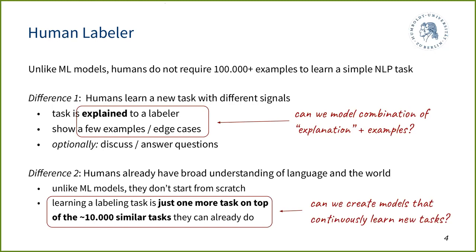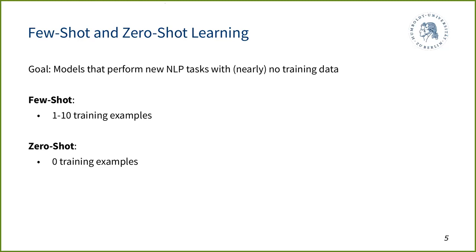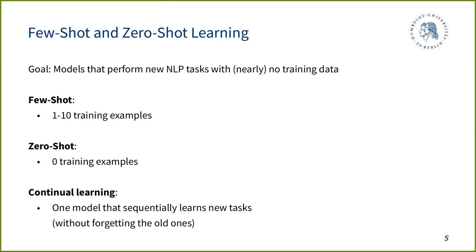That brings us to few-shot and zero-shot learning — creating models that can perform new NLP tasks with nearly no training data or with no training data at all. In few-shot learning, we generally only want between one and ten training examples. In zero-shot learning, we show zero training examples but still expect the machine to do a new task. In continual learning, one model sequentially learns new tasks while retaining all previous tasks — it shouldn't forget old ones just because it learned a new one.